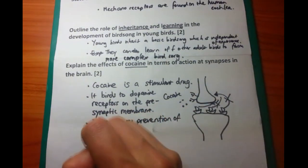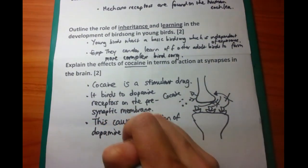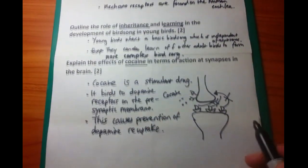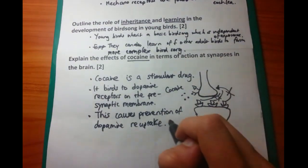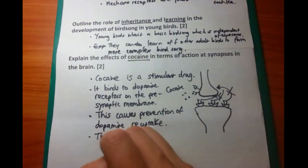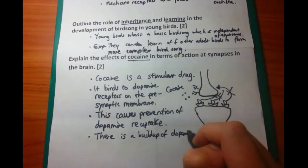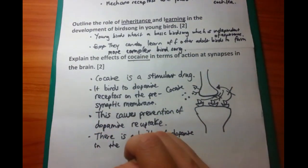This prevents the reuptake of dopamine. So that dopamine stays within the synapse. And this activates the postsynaptic membrane so that you have lots of action potential going. You have too much than normal. So there's a buildup of dopamine in the synapse, which means more action potential and more stimulus.